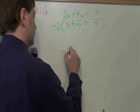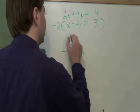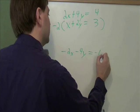Negative 2 times x is negative 2x. Negative 2 times 2y is minus 4y. Negative 2 times 3 is negative 6.